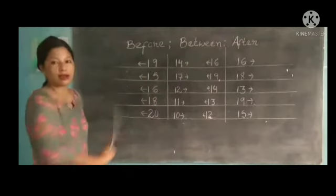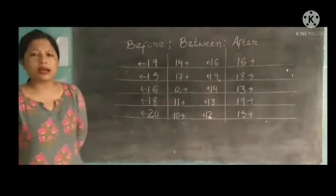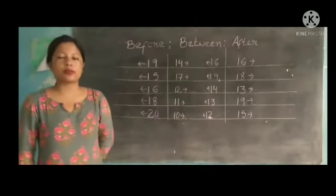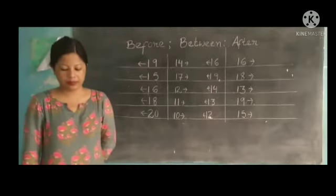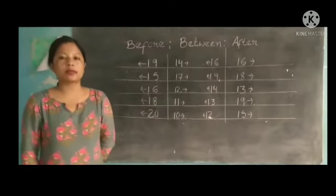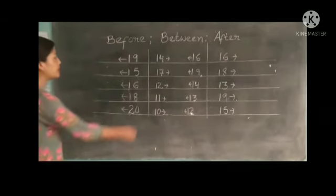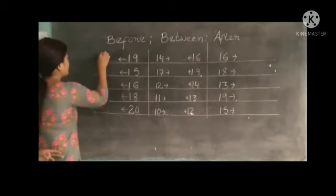First, before, between, and after. 11 comes before 12. 13 is between 12 and 14. 15 comes after 14. Now here, before 19 means 18.